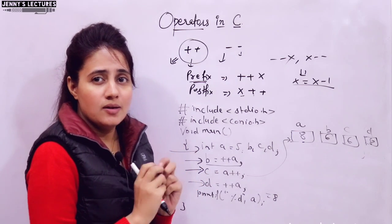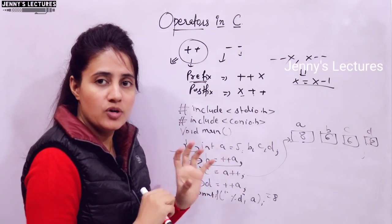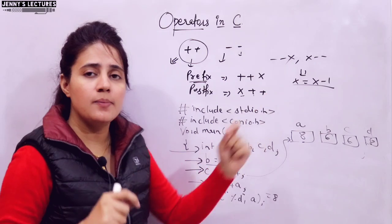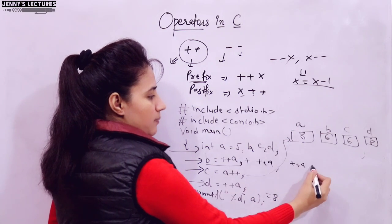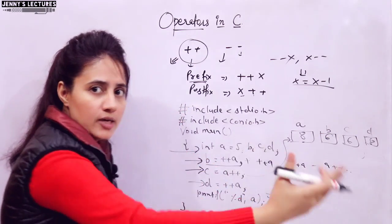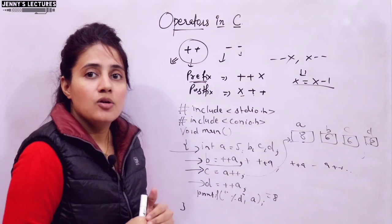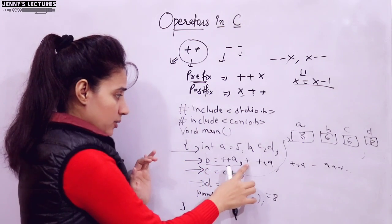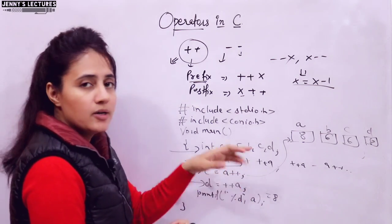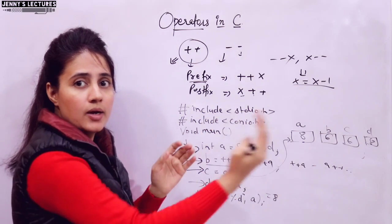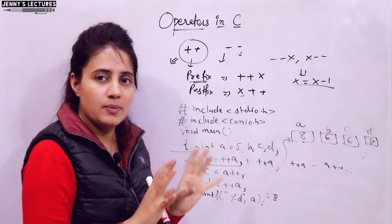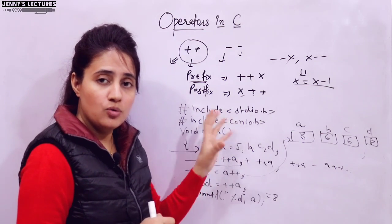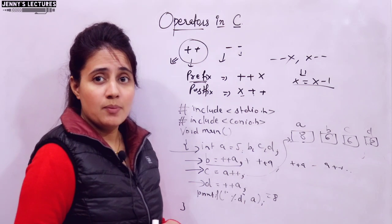We can take many more examples based on increment and decrement operators. In one expression, we can use multiple increment and decrement operators, like ++a + a++ or ++a - a++. In such cases, we check precedence and associativity. These increment/decrement operators have higher precedence than arithmetic operators, and their associativity is right to left. We will discuss four or five more examples in the next video for a better understanding.